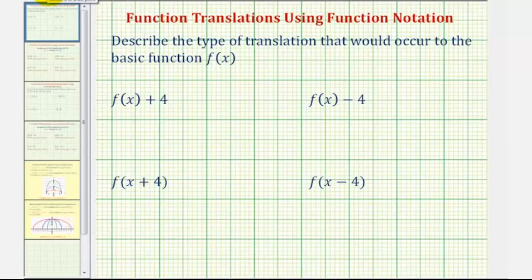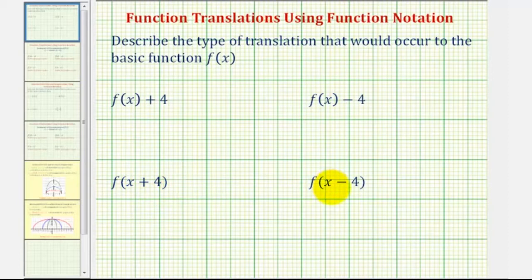We want to describe the type of translation that would occur to the basic function f of x. We're given f of x plus four, f of x minus four, f of the quantity x plus four, and f of the quantity x minus four.